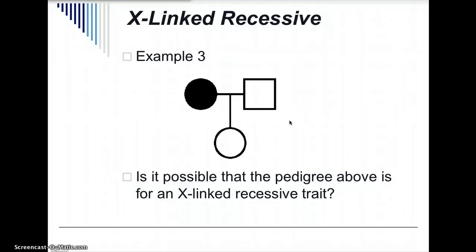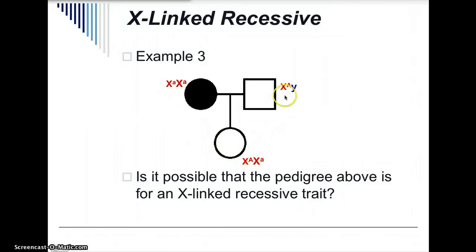Is it possible that this pedigree is for an X-linked recessive trait? The mom has two recessive alleles, and the dad has a dominant allele and a Y chromosome. The daughter is heterozygous — she gets the one dominant allele from her dad's X chromosome and one recessive allele from her mom's X chromosome. So she is a carrier for the trait, but she does not actually have it herself.